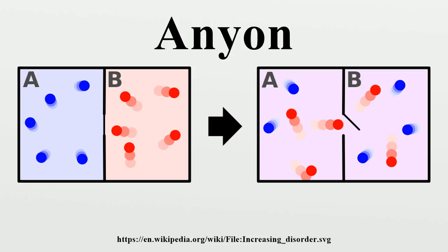Anyonic statistics must not be confused with parastatistics, which describes statistics of particles whose wave functions are higher-dimensional representations of the permutation group.